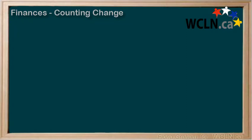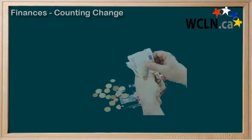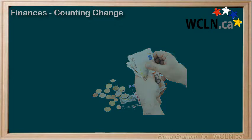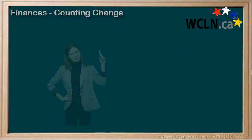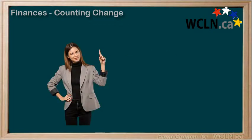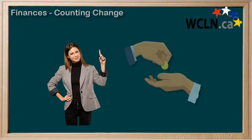In this video we will explain how to count up to find out how much change you should get back after purchasing something. Counting up means that we start at the price and then we count up until we reach the amount that you, the customer, give. The amount we actually count up is the change.